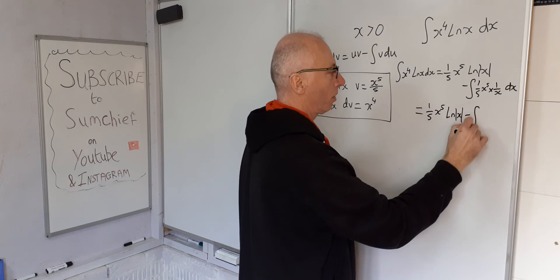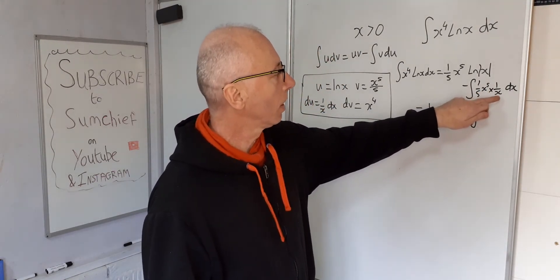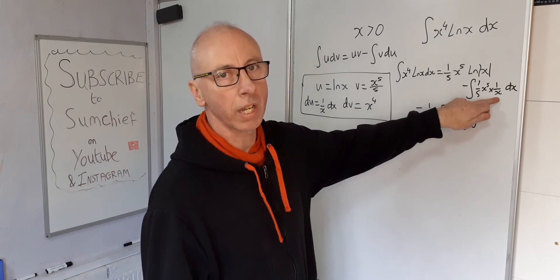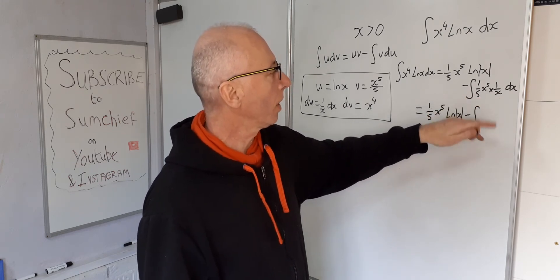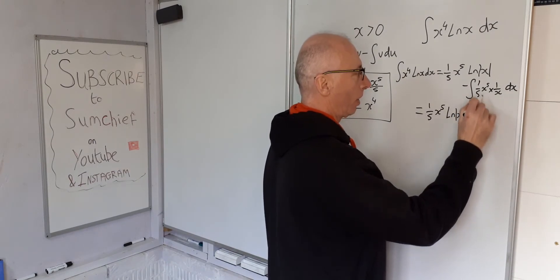Now this integral inside, we could do some simplification here. x to the 5 times 1 over x will just give us x to the 4. And the 1 over 5 we can bring out front. So 1 over 5 and then x to the 4 dx.